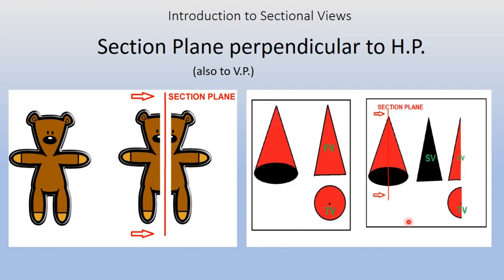Taking the cone example again: this is the cone with its front view and top view when uncut. When you cut it with a sectional plane perpendicular to HP and VP, you will have half a front view and half a top view, and the side view will reveal the internal features in hatching lines. This is the right-hand side view drawn on the left-hand side. Cutting from this side perpendicular to HP and VP removes this portion as visible in the front and top views.